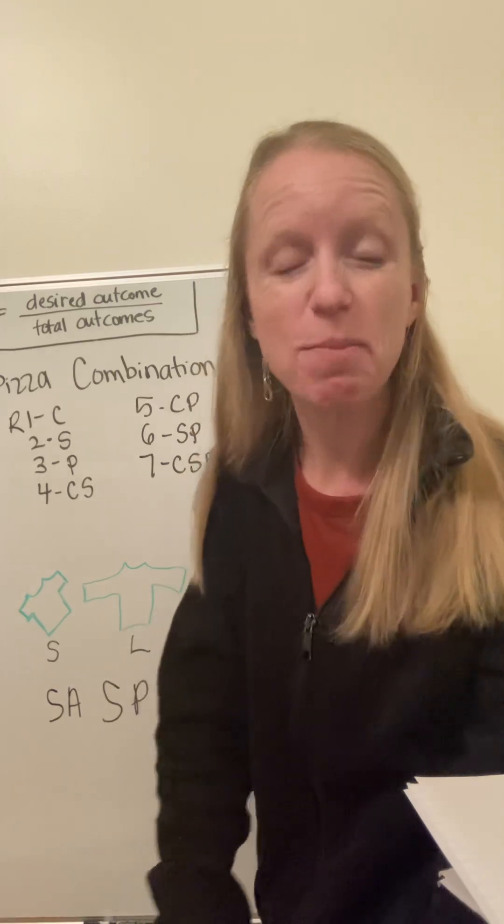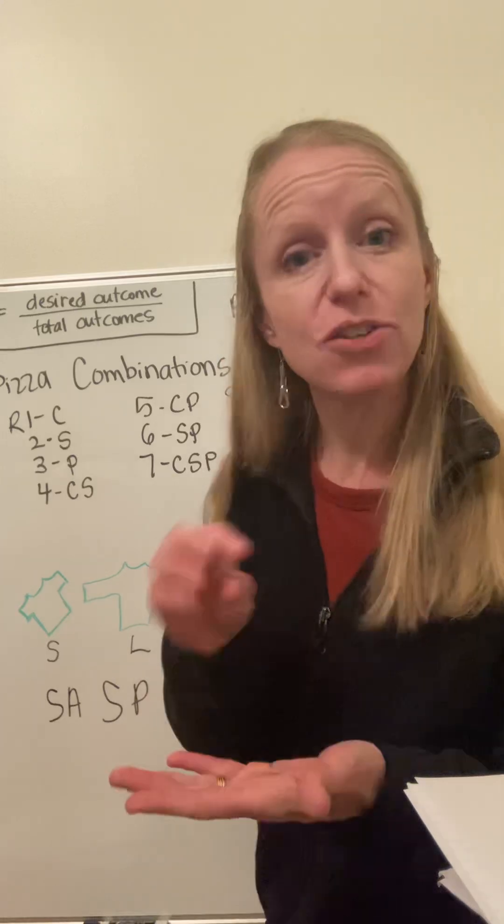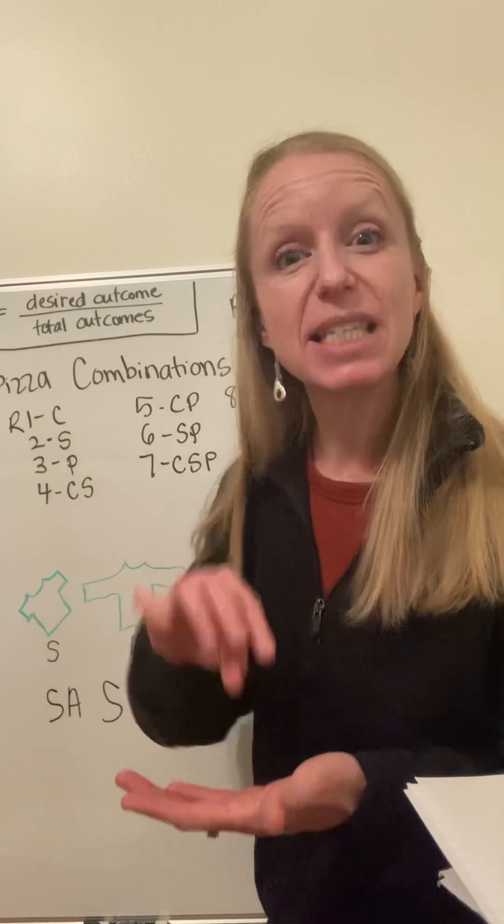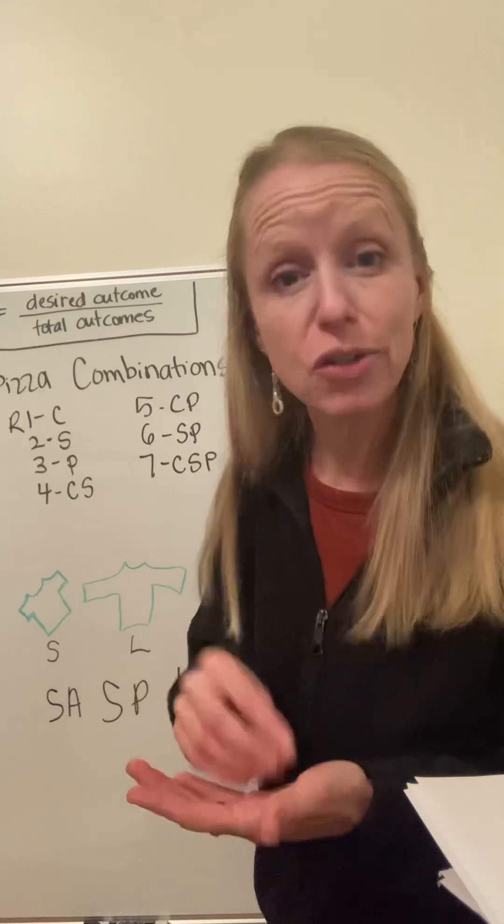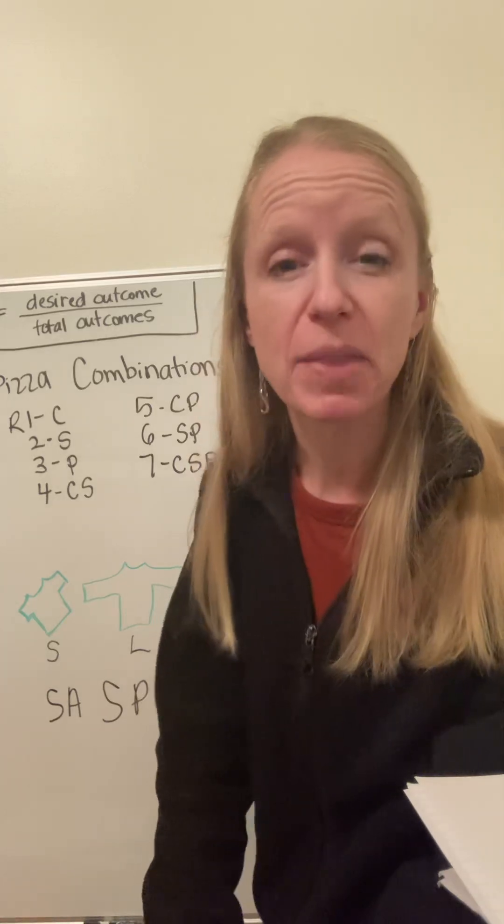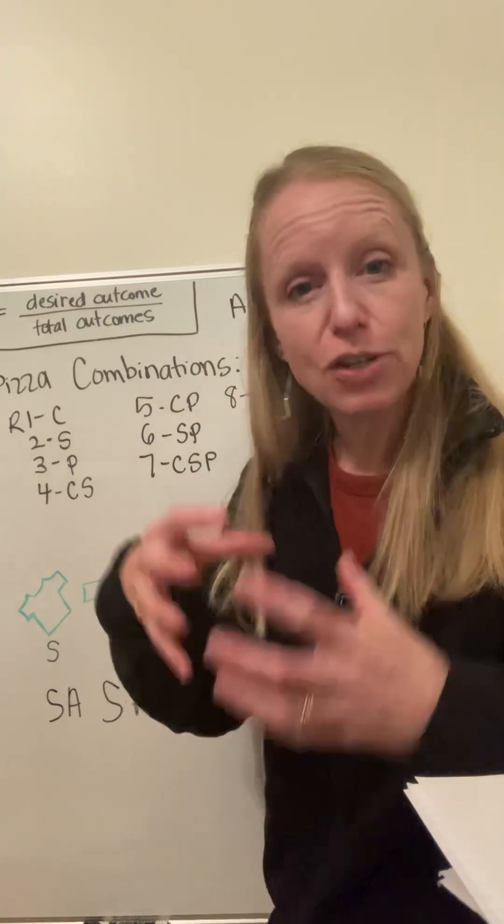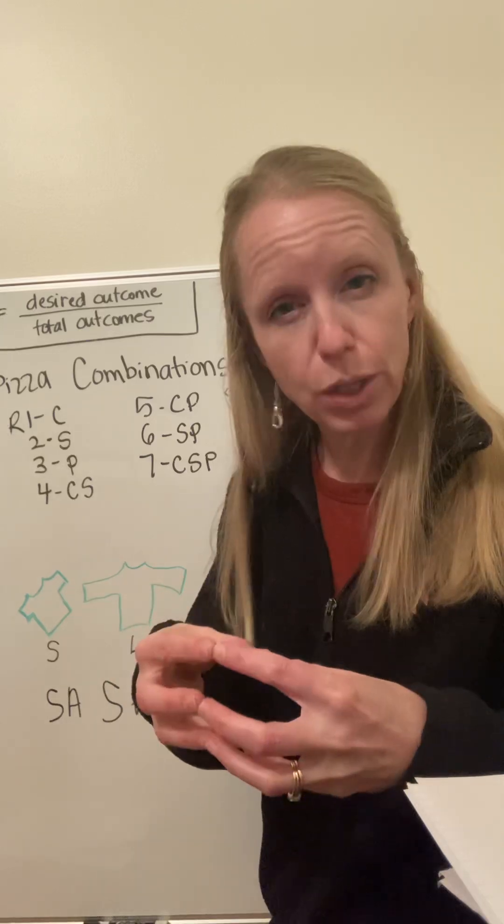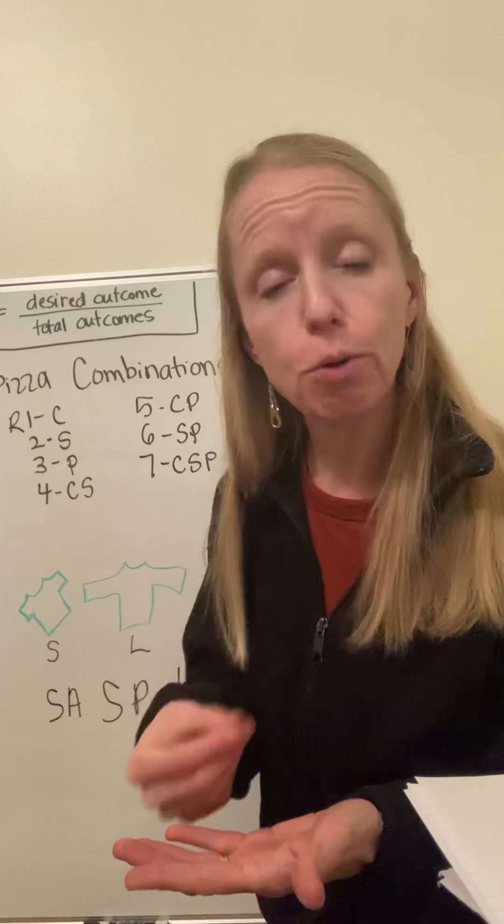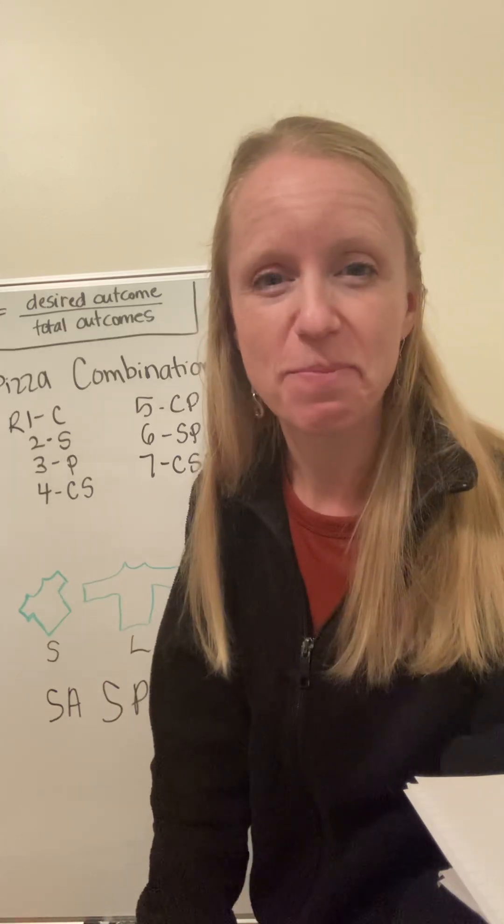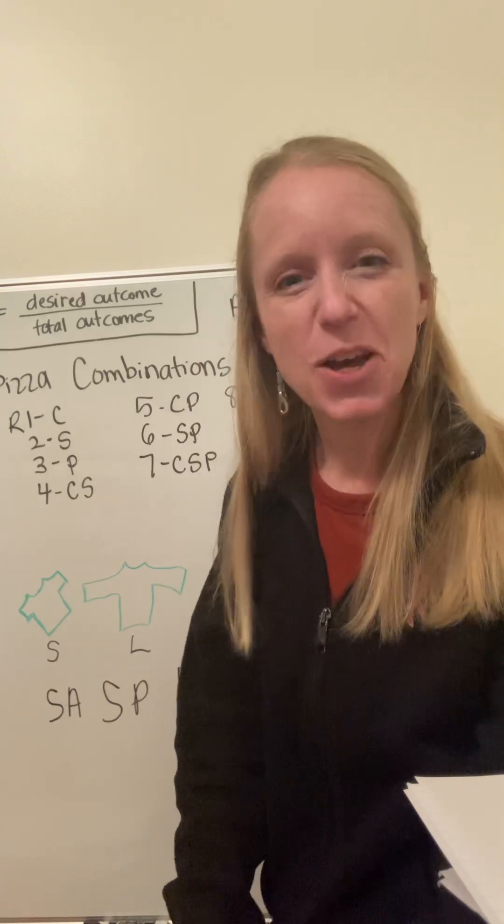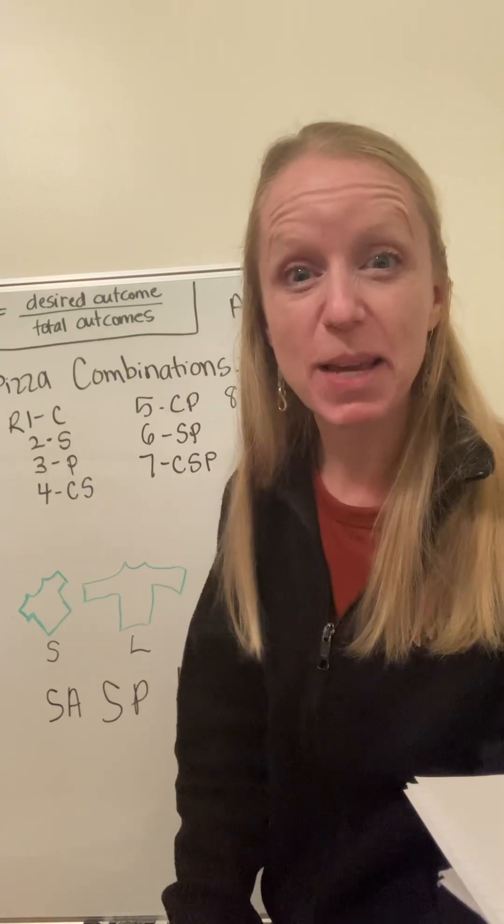Apparently the mathematical joke is that a combination lock should have been called a permutation lock. Because the order that we do those numbers in actually matters. Obviously if you do them out of order, it won't work. And so even though it's a combination, a group of numbers we're using, the order does matter. And that is called a permutation instead of a combination. Okay. Hope that makes sense. And have fun making pizza.